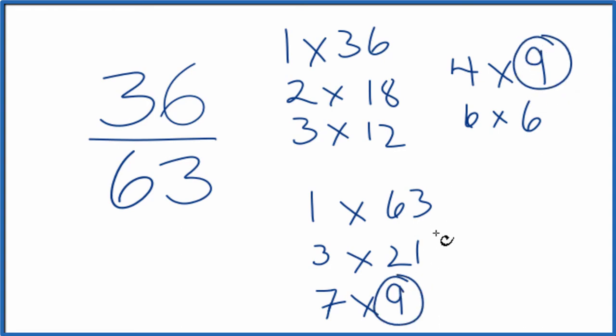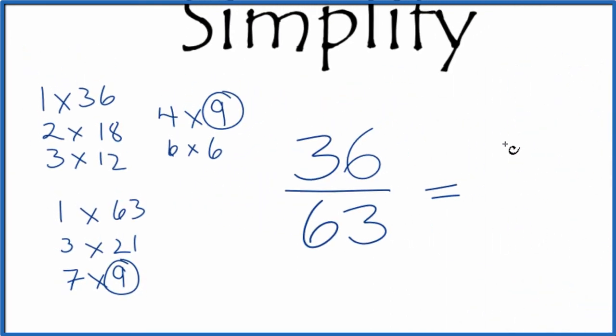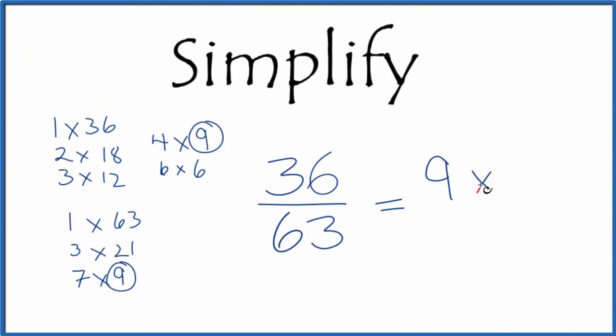Let's move this here over to the other side so we could think of it this way: we have 9 times 4, that equals 36, and then 9 times 7—9 times 7, that equals 63.